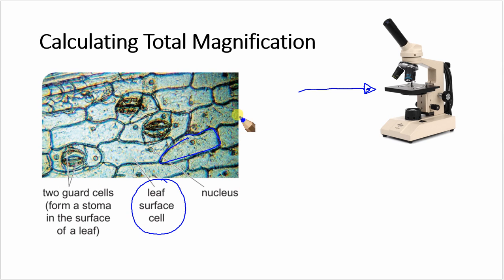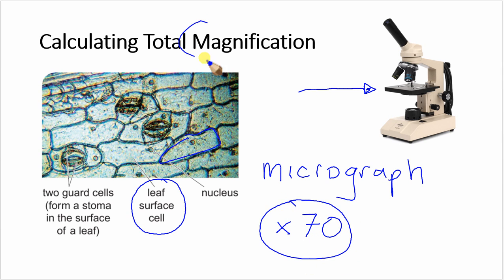This picture is known as a micrograph. Micrographs are very often accompanied with additional information which might look something like this. Here we've got ×70, which relates to the magnification.